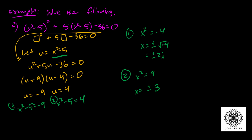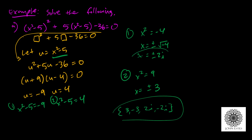So my solution set would be: 3, negative 3, 2i, and negative 2i. Some books write solutions in braces like this; others are fine with writing x equals. Either way, those are the four solutions: plus or minus 3 and plus or minus 2i.